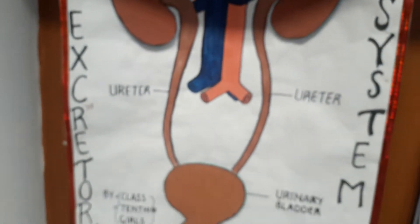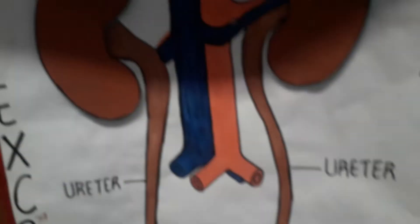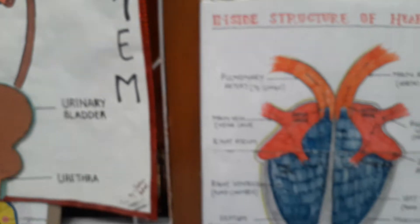And here, models of the urinary bladder, urinary bladder, and the kidney — excretory systems.